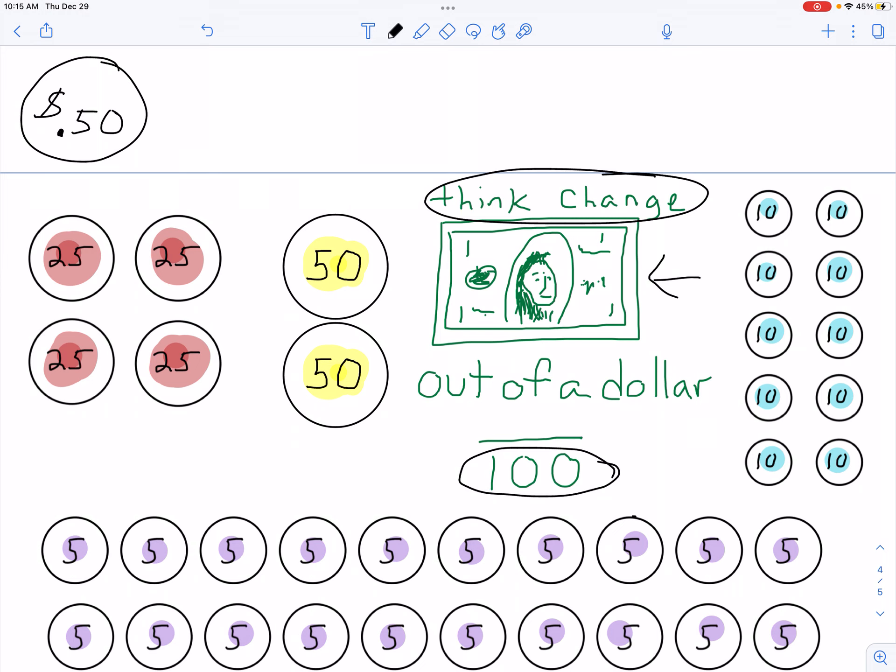Here we go. Let's talk 50 cents. We know two quarters. There are four quarters total. Two of them makes 50 cents. So two out of four quarters.